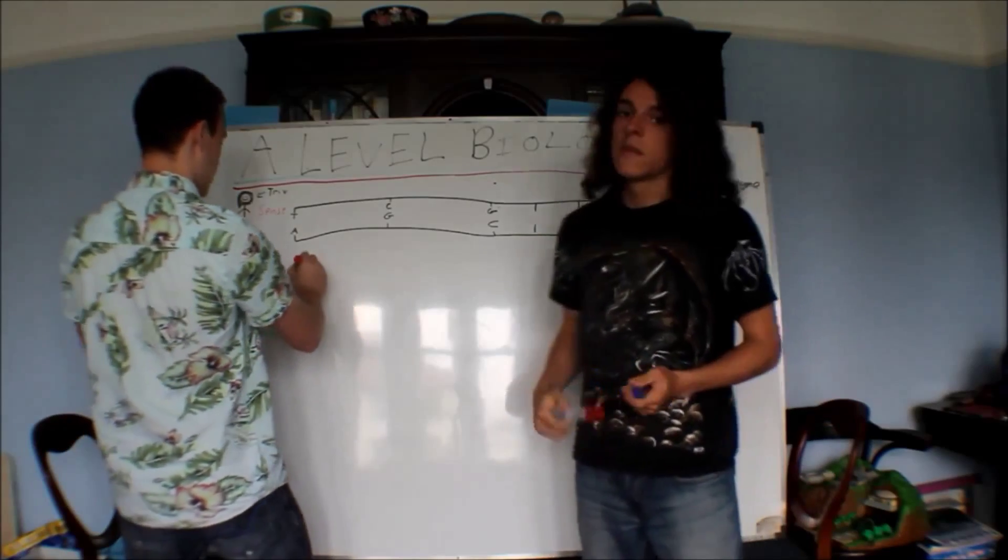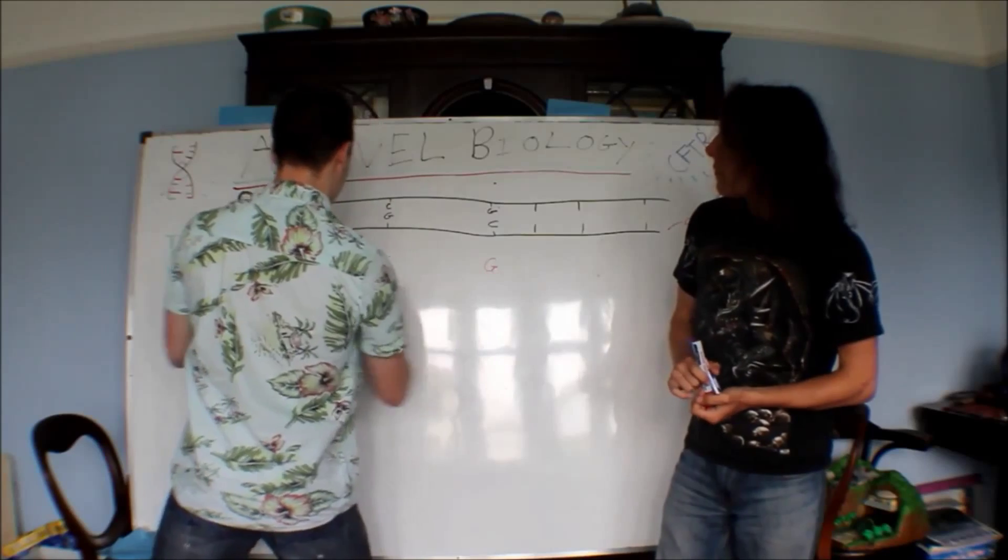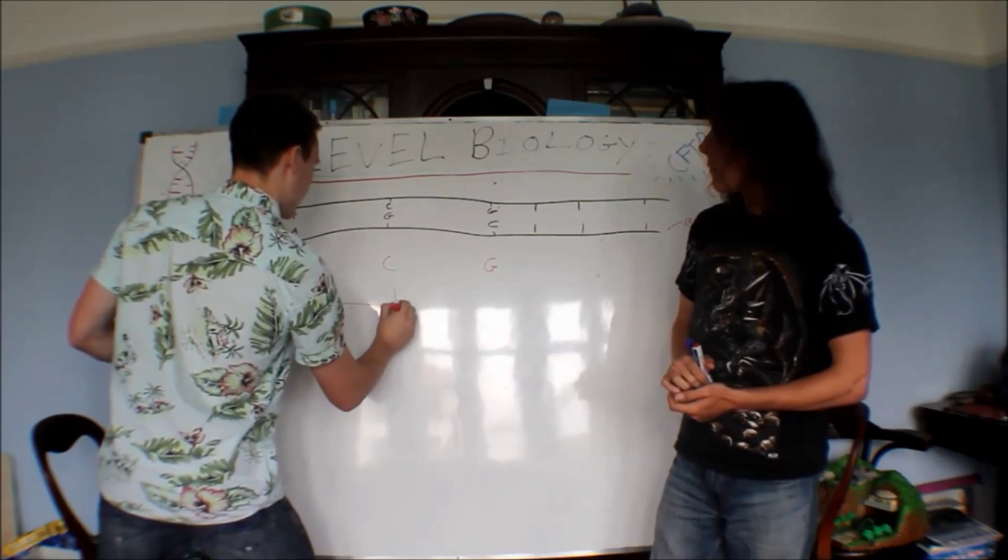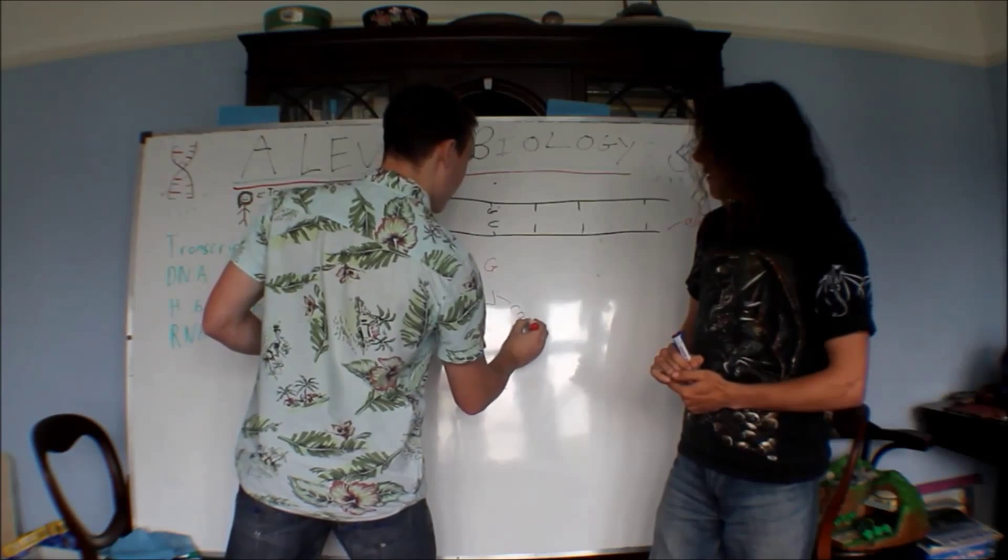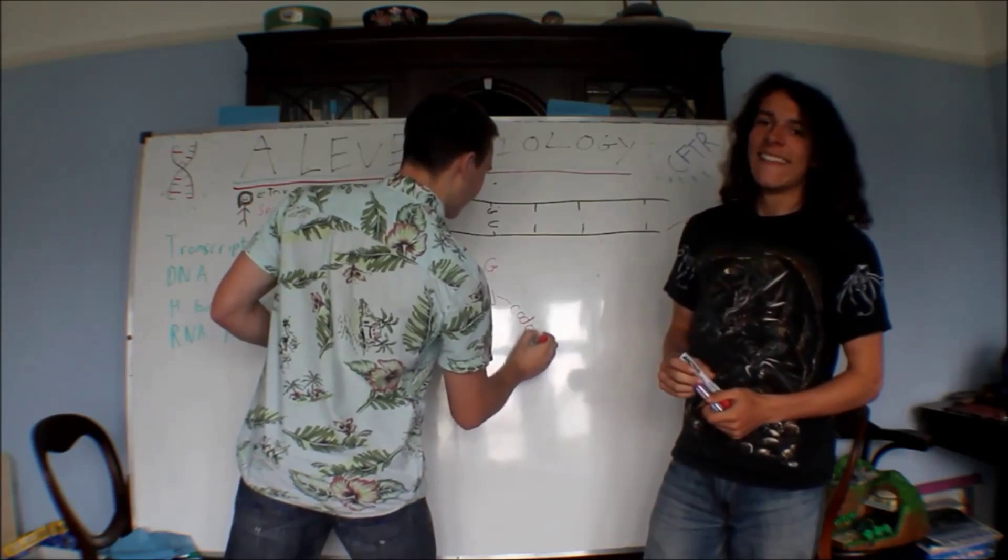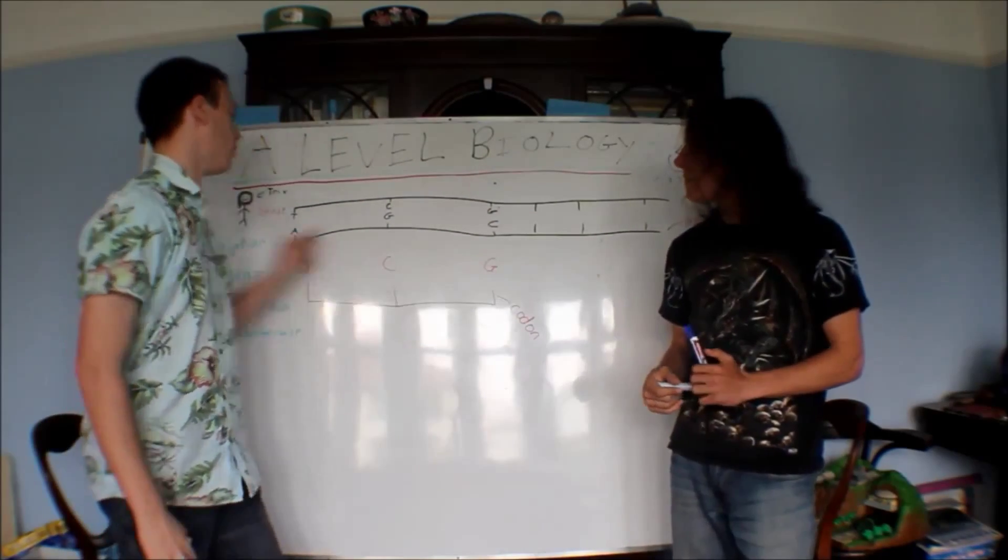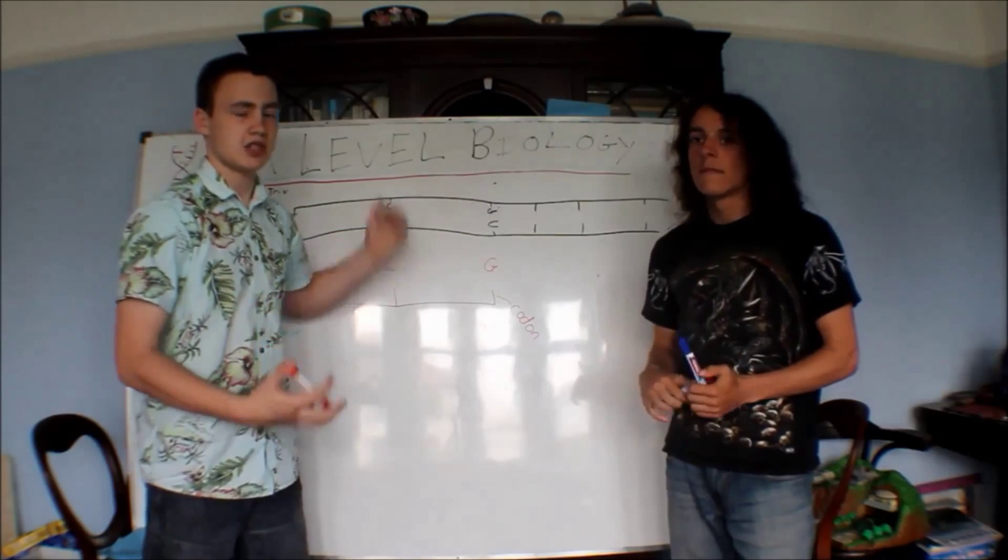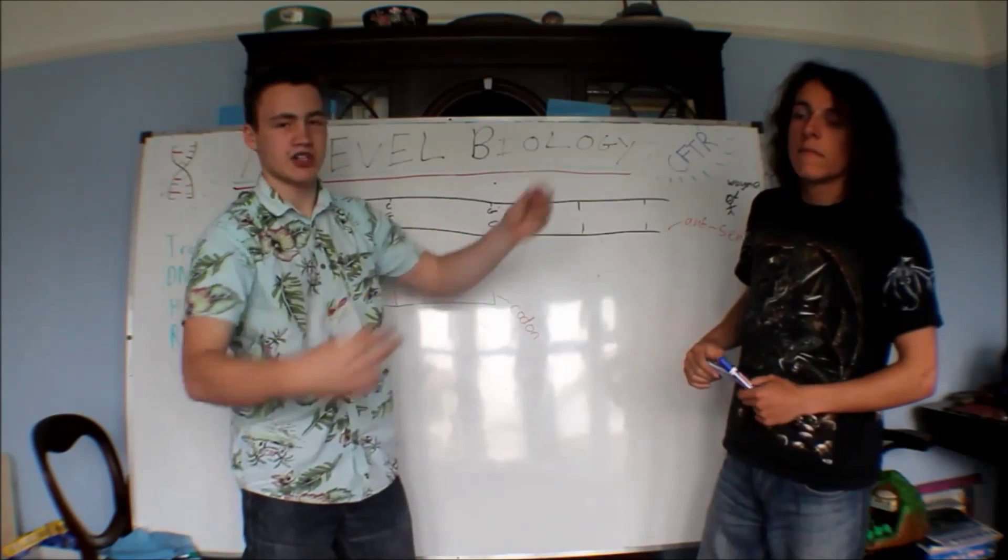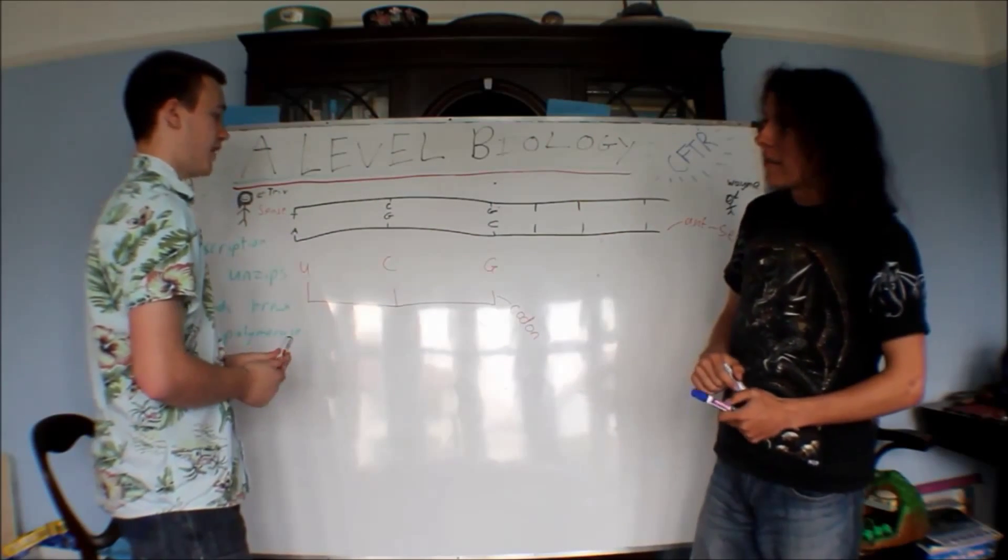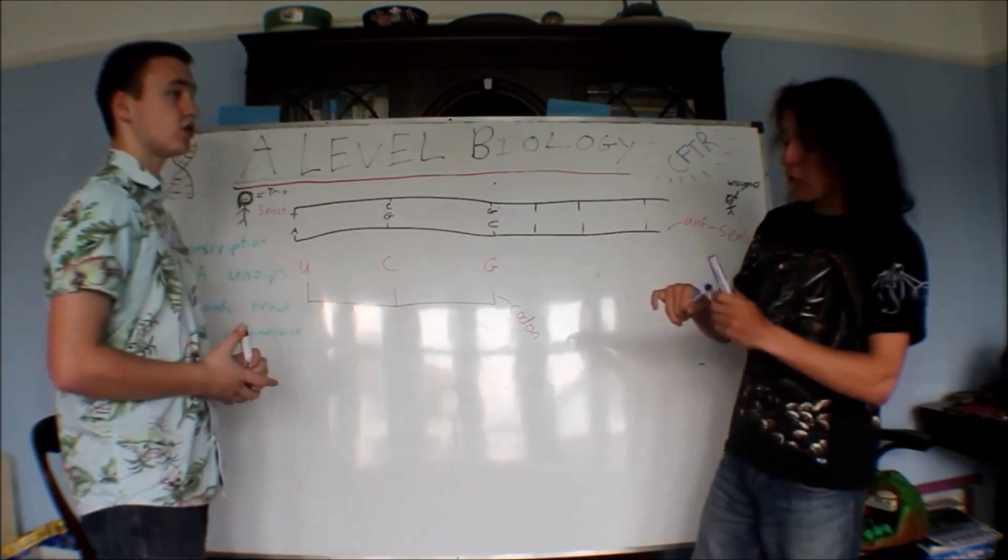A codon. You can see that this codon is a copy of the sense strand, except T's replaced with U. And that happens all the way down the chain, however much it unzips. And that flies out the nucleus, which leads us on to the next stage, which is called translation.